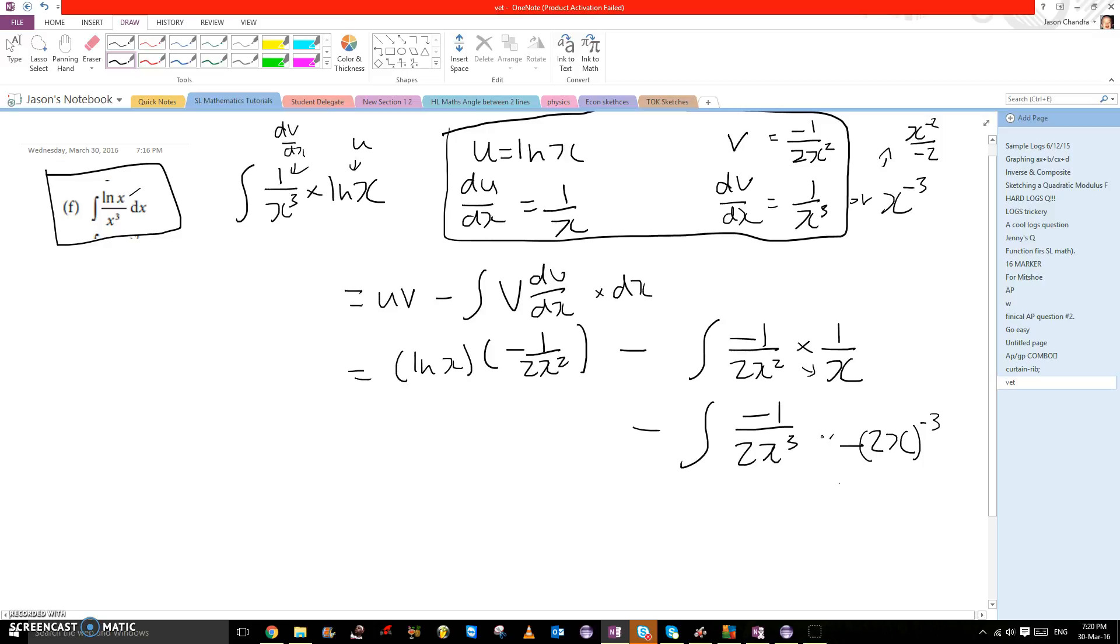If we integrate this, we get minus 2x to the negative 2 over minus 2. If we let minus 1 be in front, that would be 1 over 2.